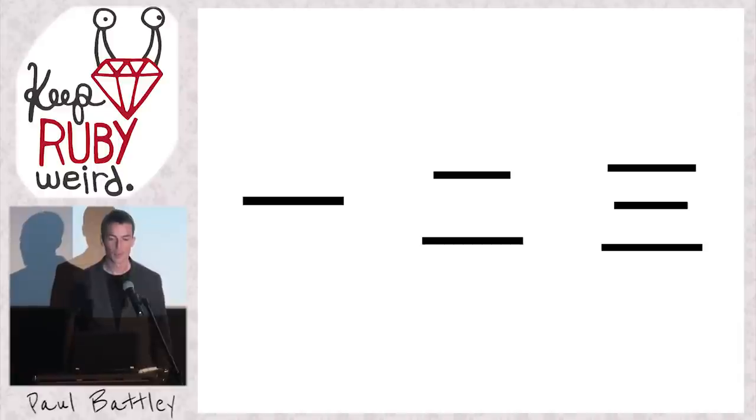But just how do you write 3daymonk in kanji, in Japanese? Well, three is really easy. One stroke is one, two strokes is two, three strokes is three.